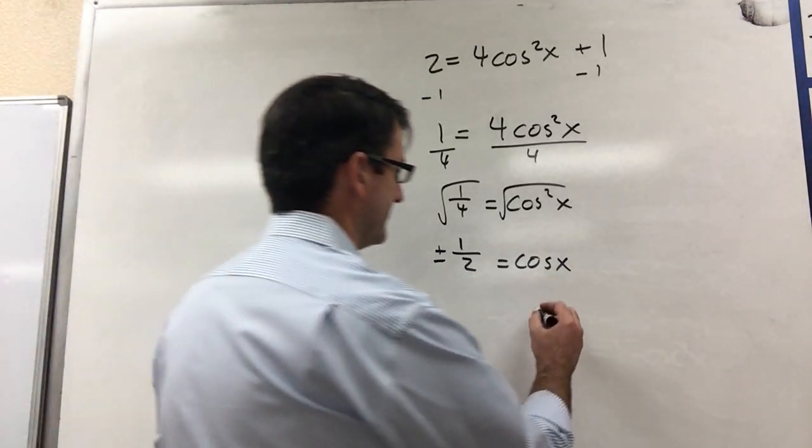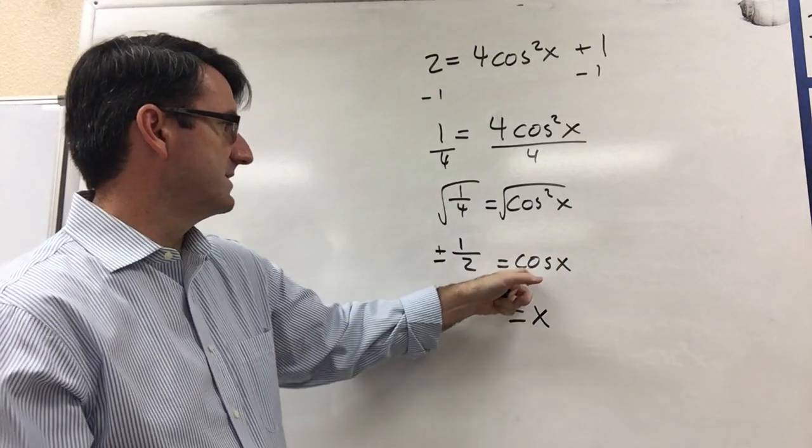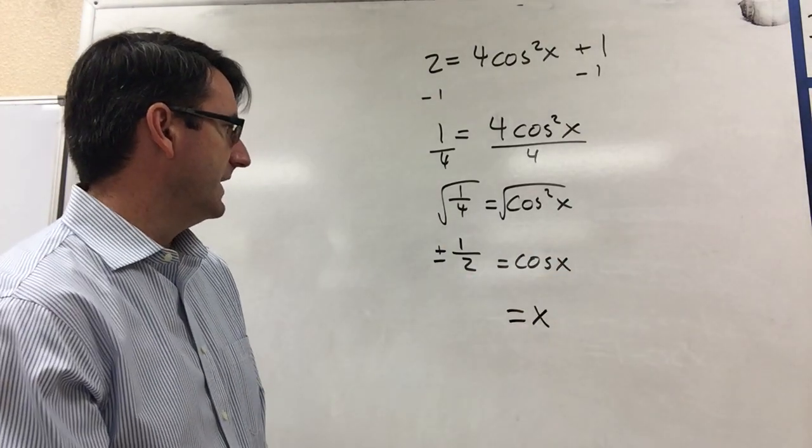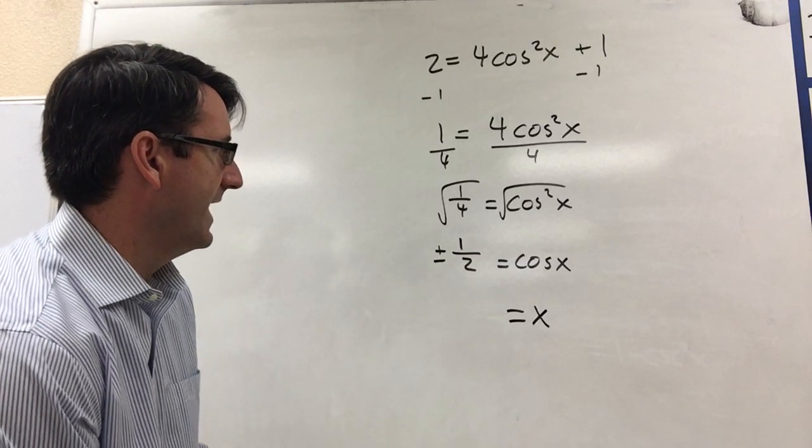So now to find x, x is going to be all the values for which the cosine is either positive 1 half or negative 1 half.